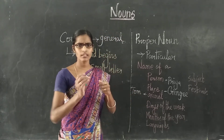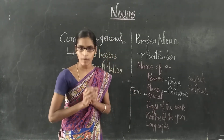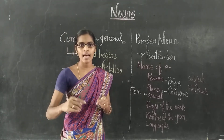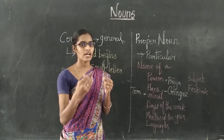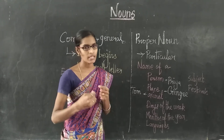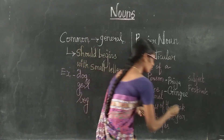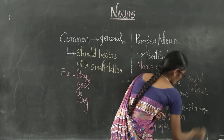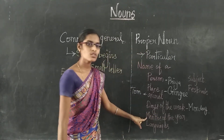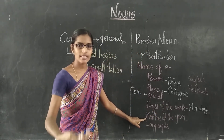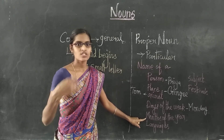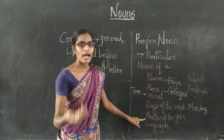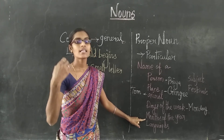Days of the week — think about whether all days in the week are named Monday only, or Tuesday only. No — each day has a different name. So days of the week also come under the Proper Noun. For example, Monday. Likewise, months of the year — each month has a separate name: January, February, March, and so on. There are twelve months in a year and each month has a separate name, so months of the year also come under Proper Noun.